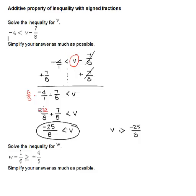It's saying that v is greater than negative 25 over 8. That's the same answer. Let's try another one.